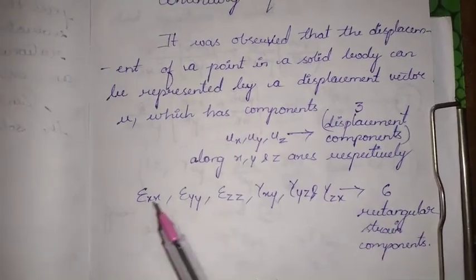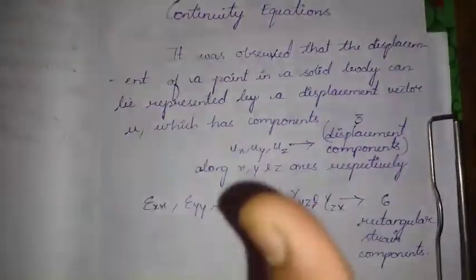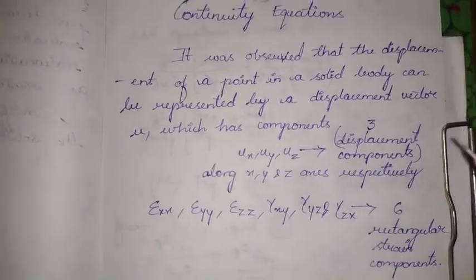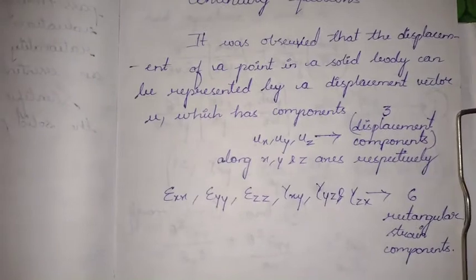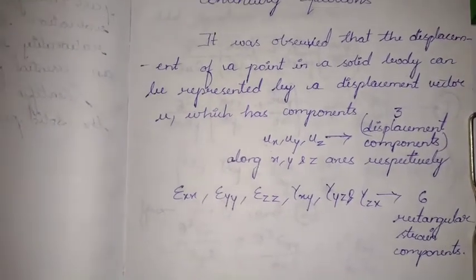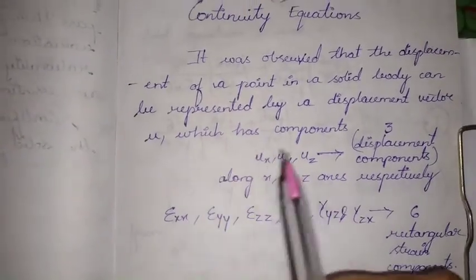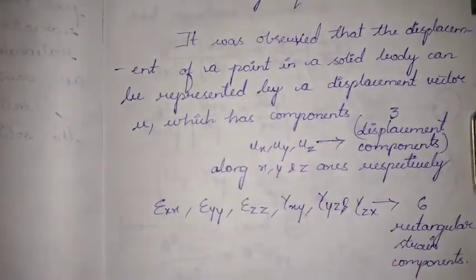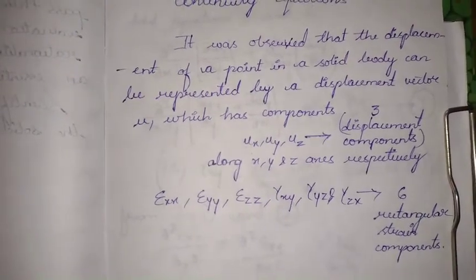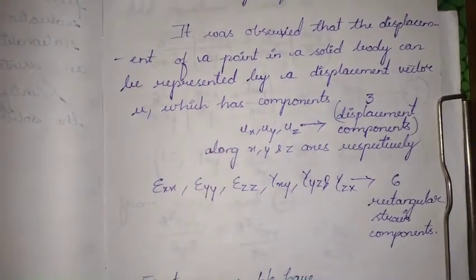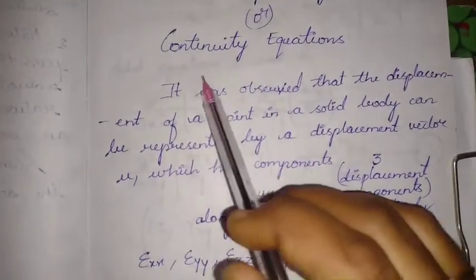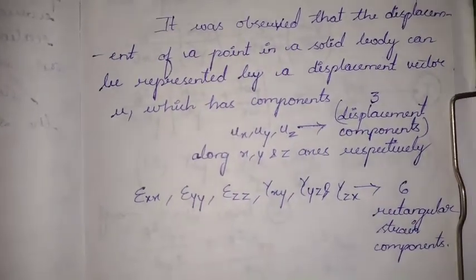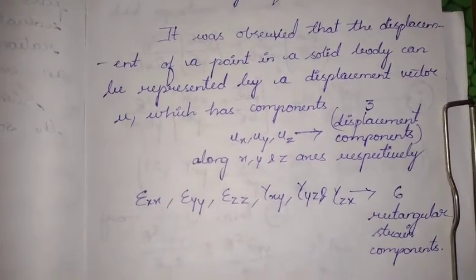Evaluation of these six rectangular strain components from the three displacement components is very easy — it involves simple differentiation. But whenever we have to solve for the three displacement components from the six rectangular strain components, we need some other relations between them. Those are called the compatibility conditions or continuity equations.